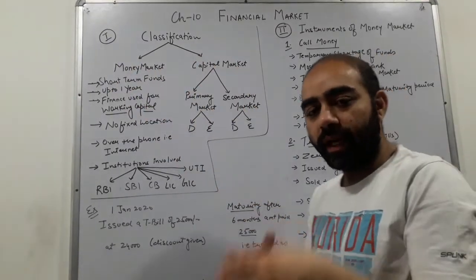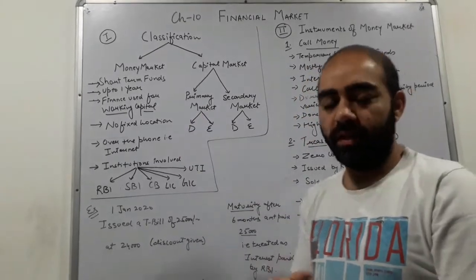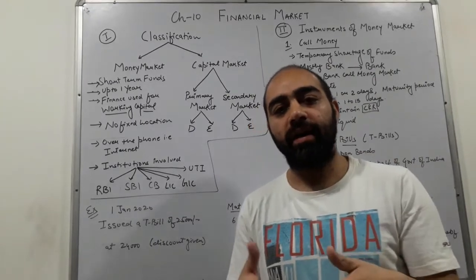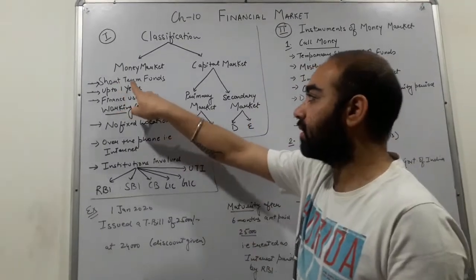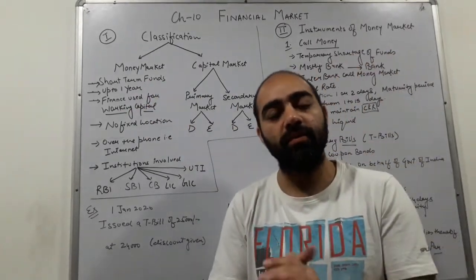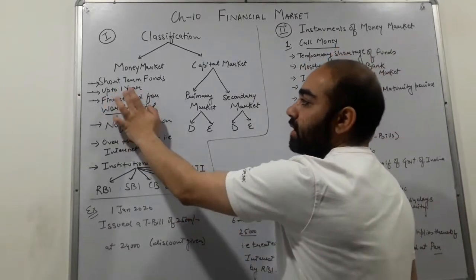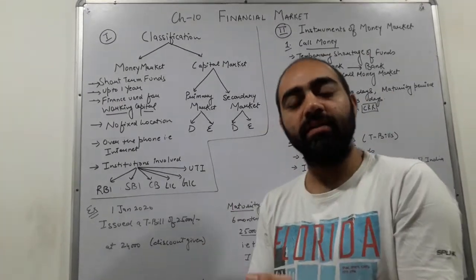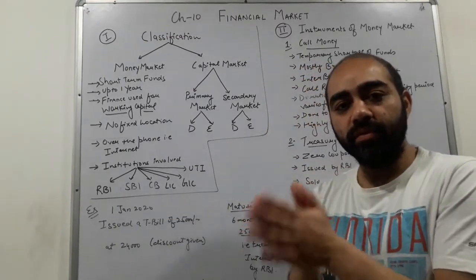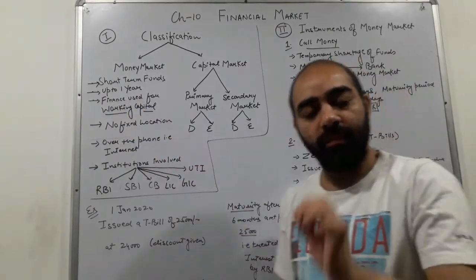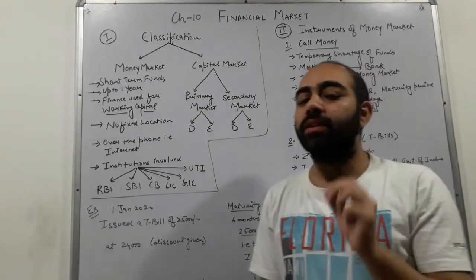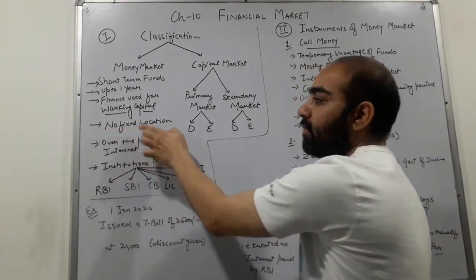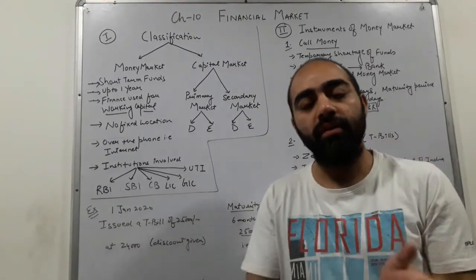Let us go through the brief chart of money market and capital market. Money market is a market where many people come and invest for a particular period of one year, which means it is a short-term fund market. The time period is up to one year. The finance used in this market — if you have invested in this market — that particular finance will be used only for working capital. Working capital is the capital used within one year in a company or institution. This market does not have a fixed location.